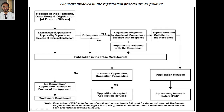If objections are not raised by the examiners, the trademark is published in the Trademark Journal. If objections are raised, those need to be rectified by the applicant. The applicant provides a response to the objections, and the supervisors or examiners re-examine it. They will see if they are satisfied with the answers to their queries. If satisfied, the trademark will be published in the Trademark Journal. If supervisors are not satisfied with the response, the application will be refused and rejected.